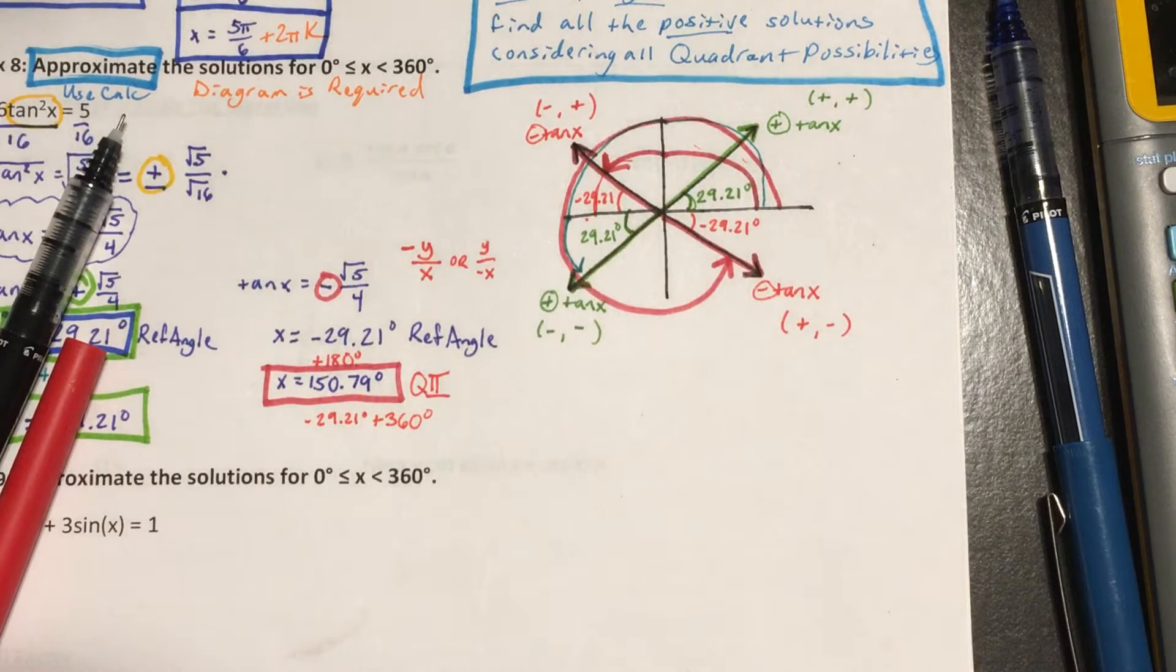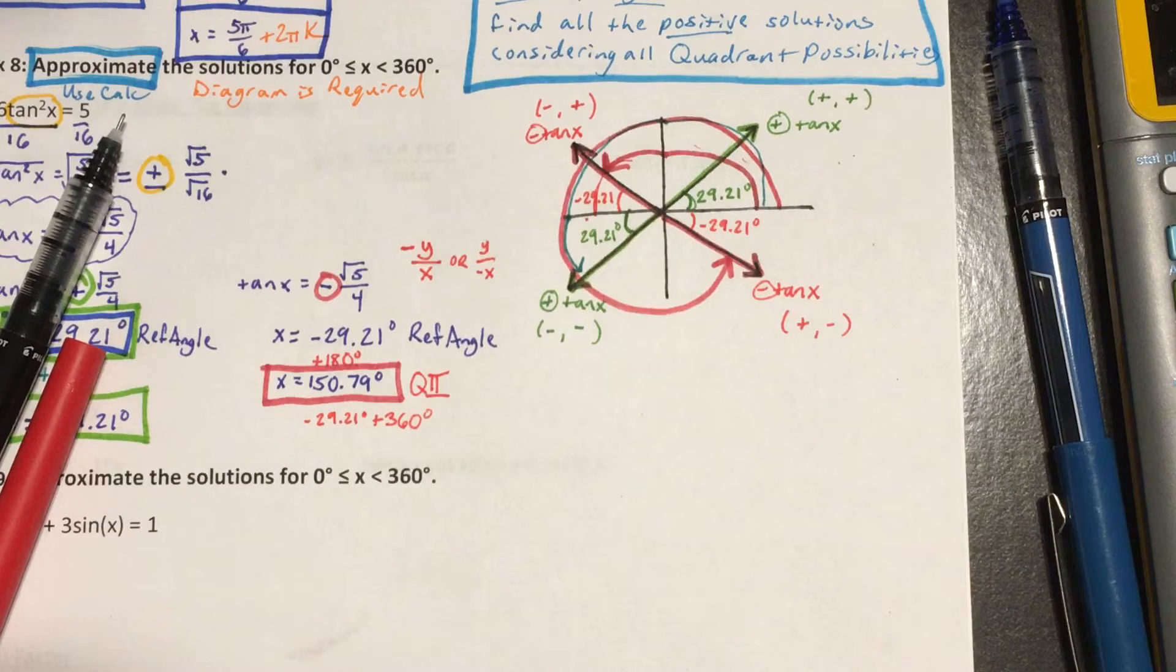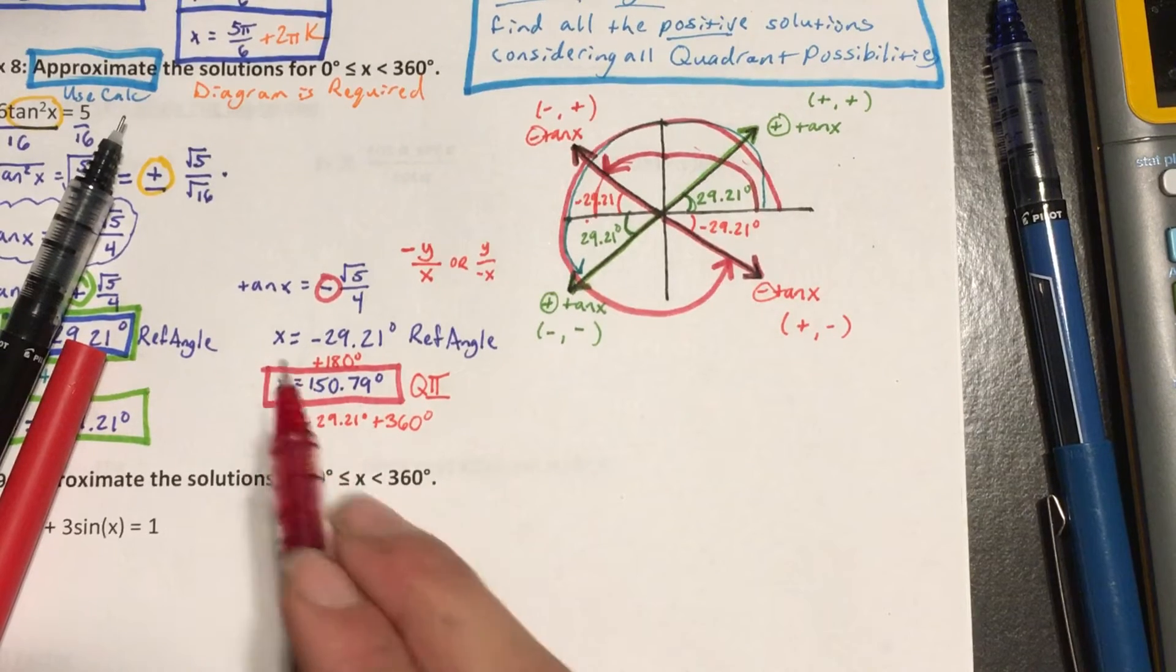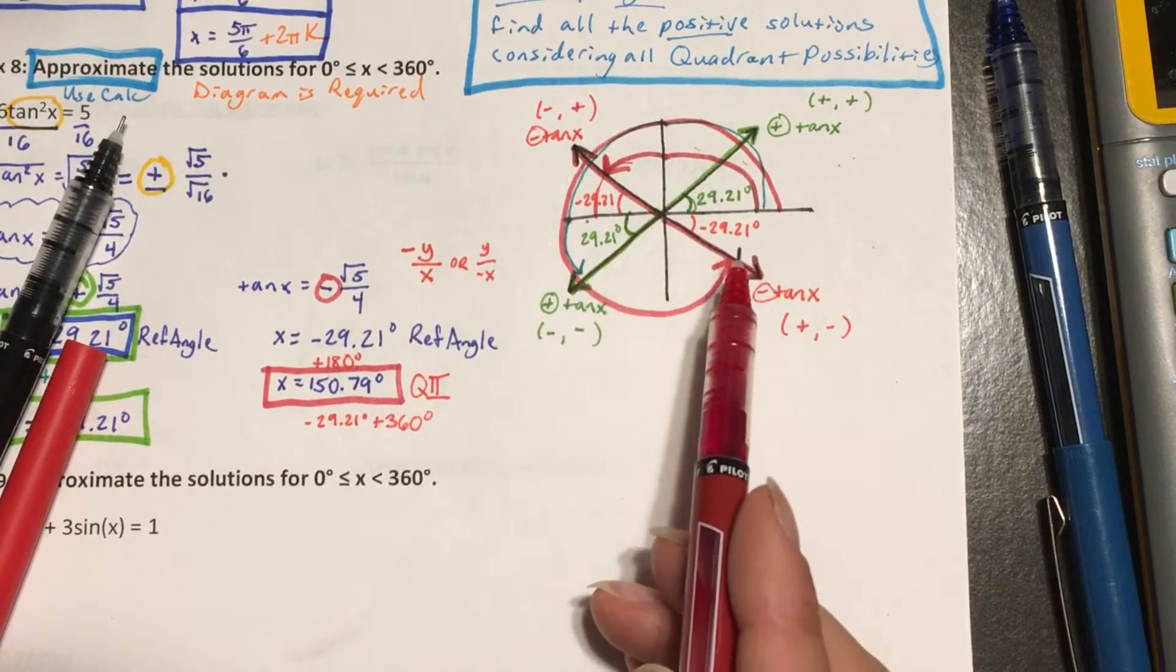So folks, unfortunately, there's no set formula like 'you always do this to find the quadrant 2 angle, you always do this to find the quadrant 4 angle.' It depends on the sign of your reference angle, first of all, and it also depends on your diagram.